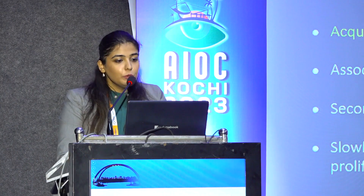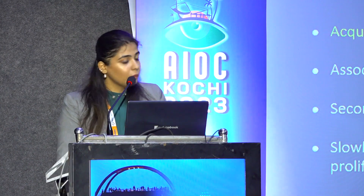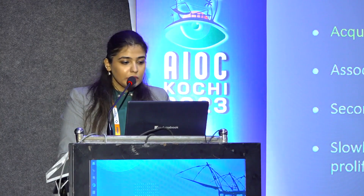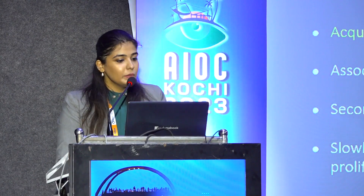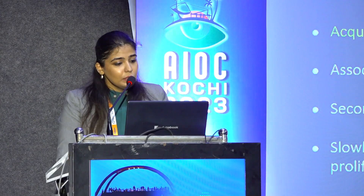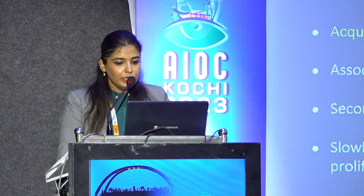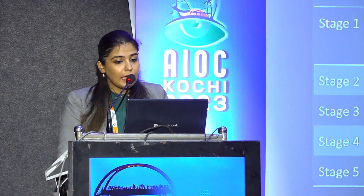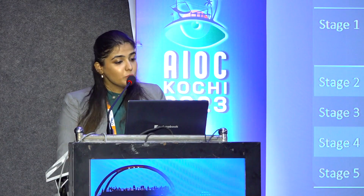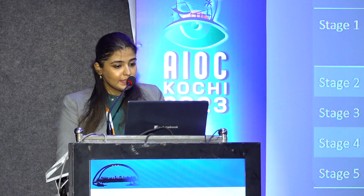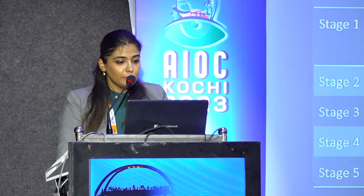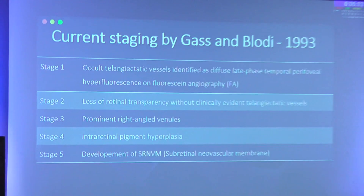Type 2 macular telangiectasia is an acquired bilateral neurodegenerative disease associated with reduction of macular pigments like lutein and zeaxanthin, with secondary vascular changes. It has a slowly progressive central vision loss with foveal atrophy and neovascular membrane proliferation. The currently accepted staging was given by Gass and Blodi in 1993, wherein stage 1 has been defined as occult telangiectatic vessels identified as late-phase temporal perifoveal hyperfluorescence on FA, and the entire staging was given on the basis of findings from fluorescence angiography and other imaging modalities.